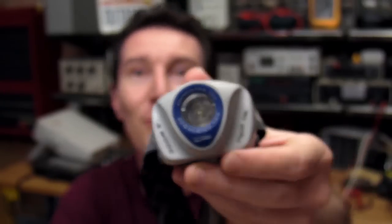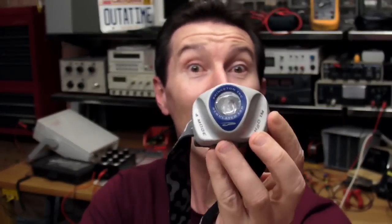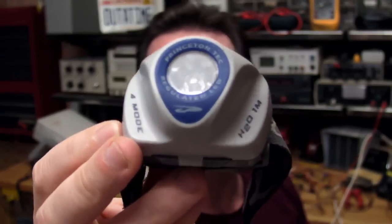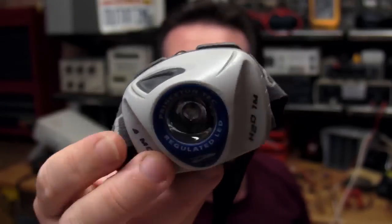And here it is, this is what we're going to tear down. This is the Princeton Tech EOS headlamp. Now, I think it's one of the best, if not the best headlamp in its class on the market. I don't think you can do any better. It's been around for a long time, probably the best part of a decade, and they still sell it, and it's still one of the best headlamps on the market.